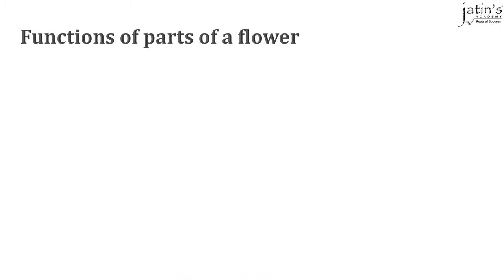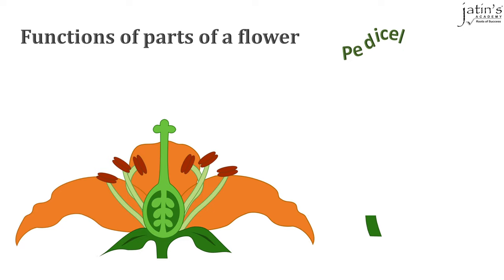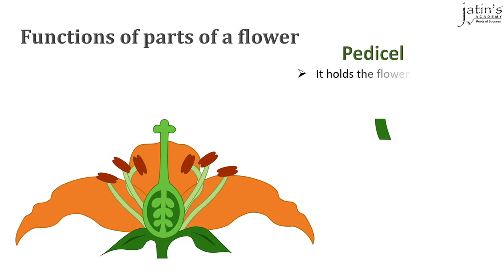Let's study the functions of parts of a flower one by one. The pedicel holds the flower upright in the straight position. It is the thin stalk underneath the flower that holds the flower upright.